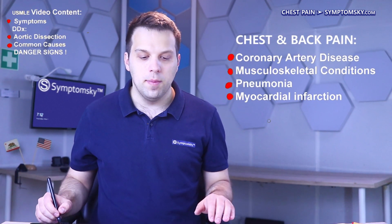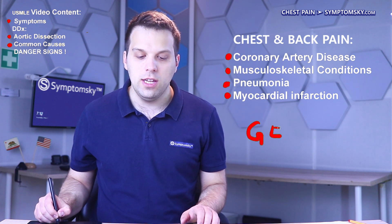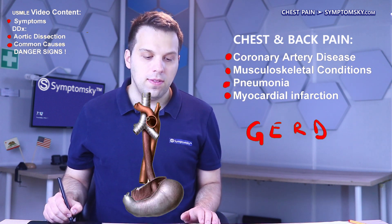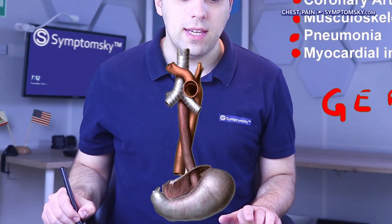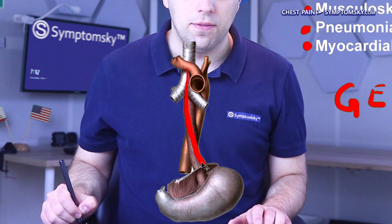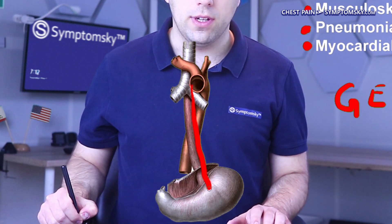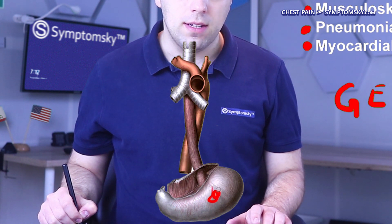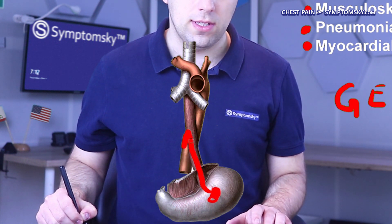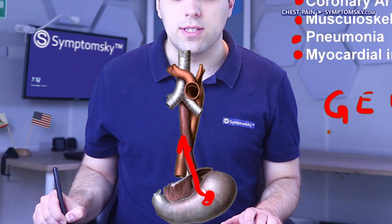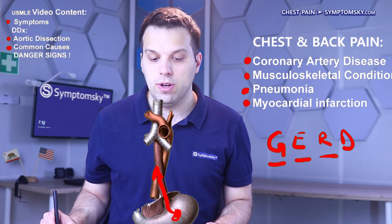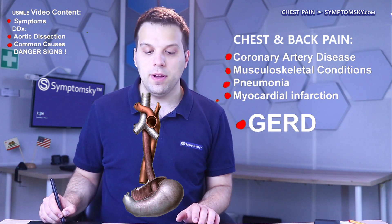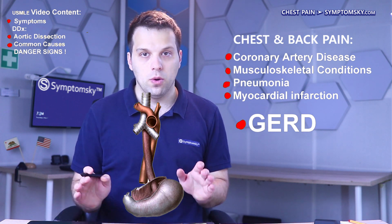Last but not least, the most common cause of chest pain is GERD. Right next to the aorta we can see the esophagus — food goes through the esophagus to enter the stomach. However, if acid from the stomach enters the esophagus, we refer to that as gastroesophageal reflux disease.